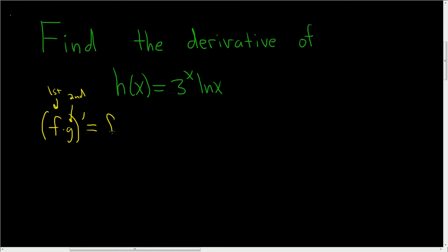So it's the derivative of the first times the second plus the first times the derivative of the second. In this problem, this is our first piece and this is our second piece.